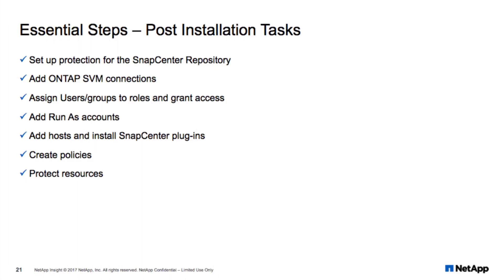Now that the licensing is complete, there are still a few tasks that need to be done before we can begin protecting the data. First, we need to set up protection for the SnapCenter repository, performed using the Protect SM Repository PowerShell commandlet, which is covered in the SnapCenter installation and setup guide. Now we can begin adding the storage connections for each of the storage virtual machines, or SVMs, containing the volumes that need to be protected. Next, we can assign Active Directory users and groups to roles and grant access to the necessary resources for each of those users and groups.